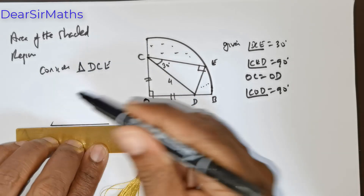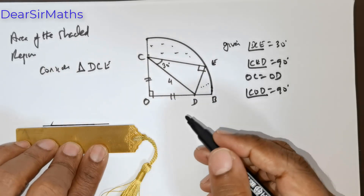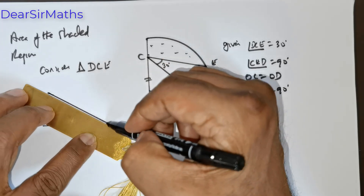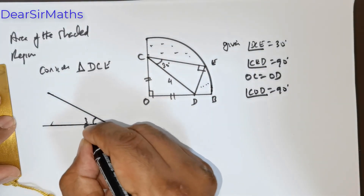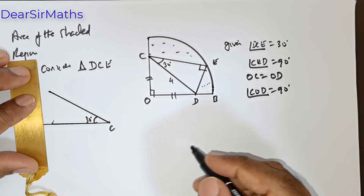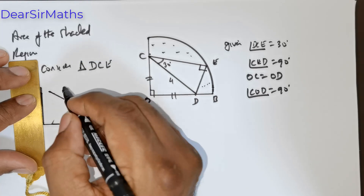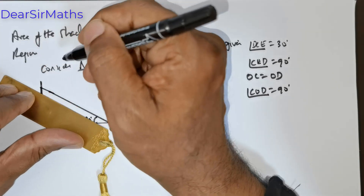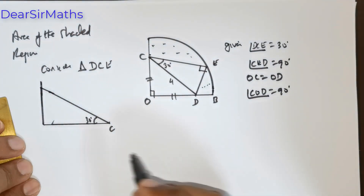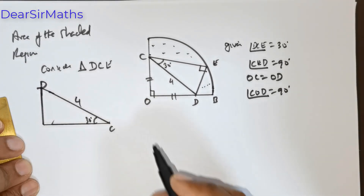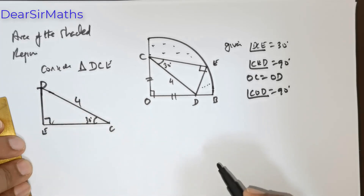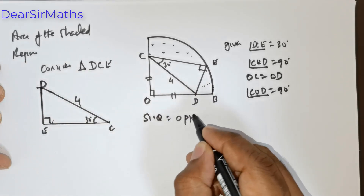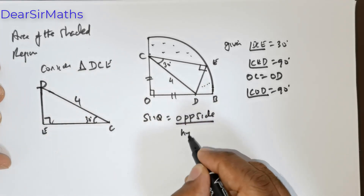I am going to draw the triangle. So this end is C, this is 30 degrees. The hypotenuse is DC, given as 4 units. This is 90 degrees and this is E.